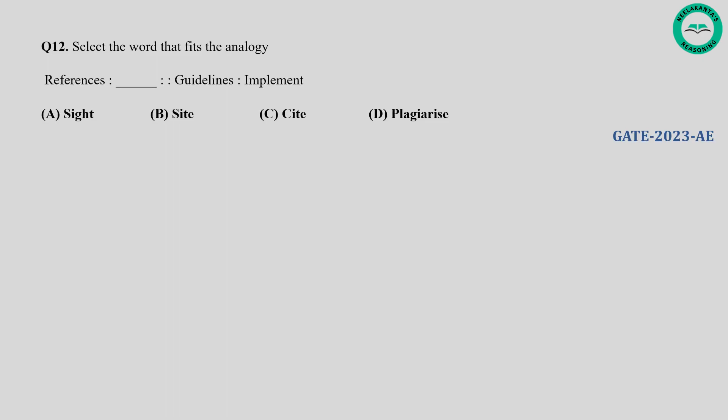Question number twelve: Select the word that fits the analogy — References, blank, Guidelines, Implement. In this analogy, references are used to implement guidelines. The term that fits in the blank should indicate something used to cite or reference guidelines. So the answer is C, that is cite.